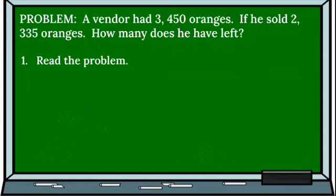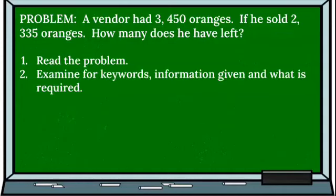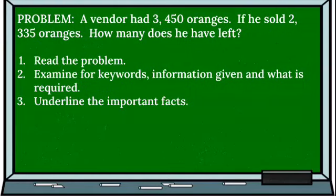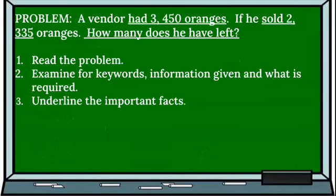So we have read the problem. Let's examine for keywords, information given and what is required. We are also going to underline the important facts. So here we have underlined our important facts. The vendor had 3,450 oranges, sold 2,335 oranges. What is required? How many does he have left?